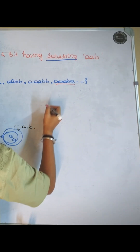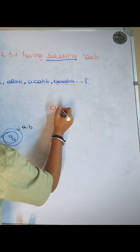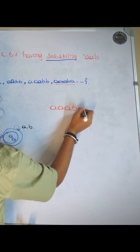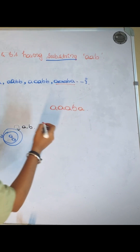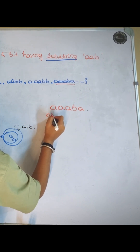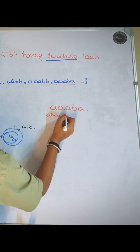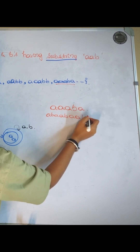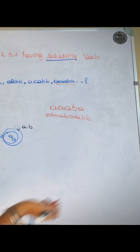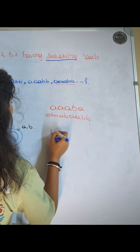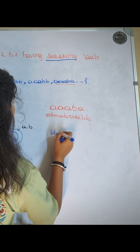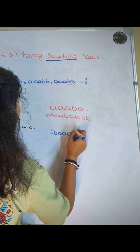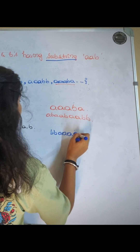One example is A, A, A, B, A. If you want a longer one, you can take A, B, A, A, B, A, A, B, B. And let's take another example: B, B, A, A, A, A.